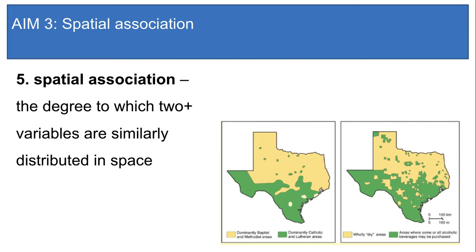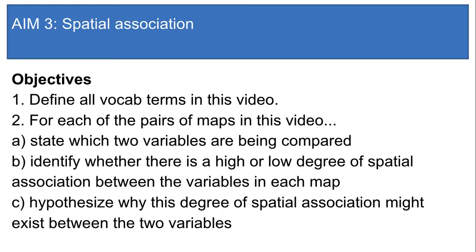To sum up, spatial association shows whether two variables overlap in space. It's important because it gives us clues about how things might be correlated. Please review the objectives and answer them on loose leaf so that you have a reference for tomorrow's do now. If you don't know the answer or aren't sure, rewind the video and review. See you in class!